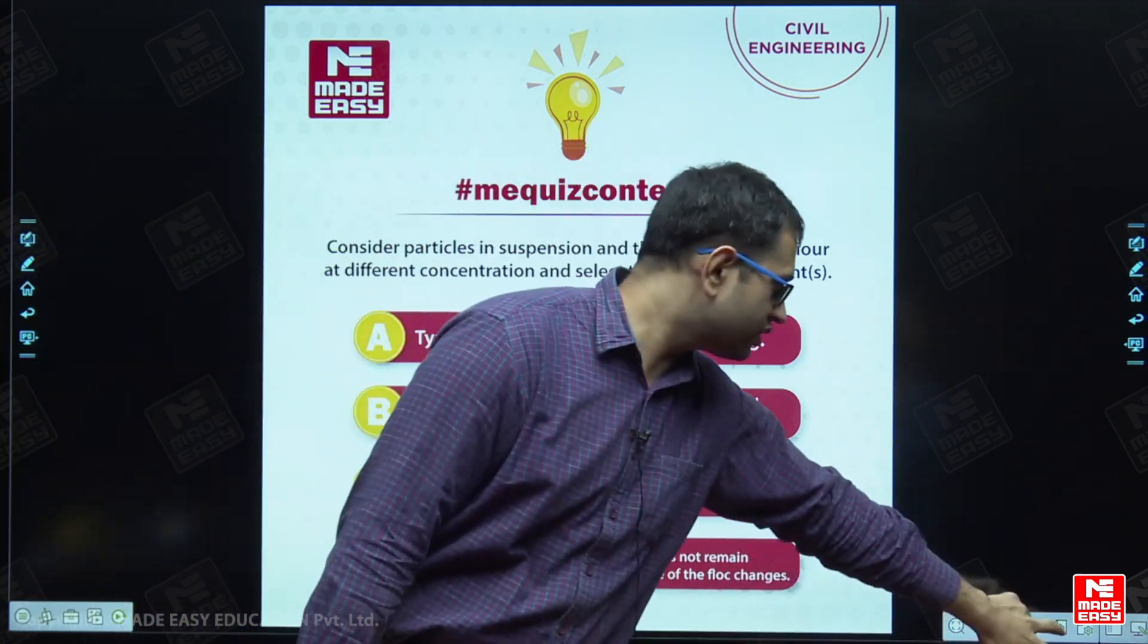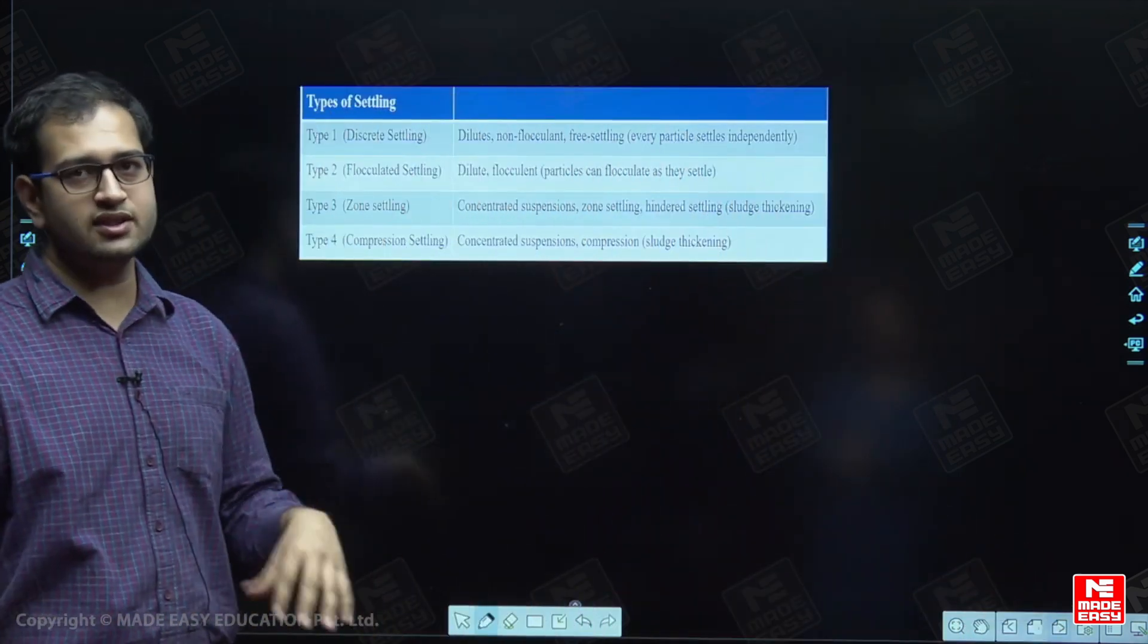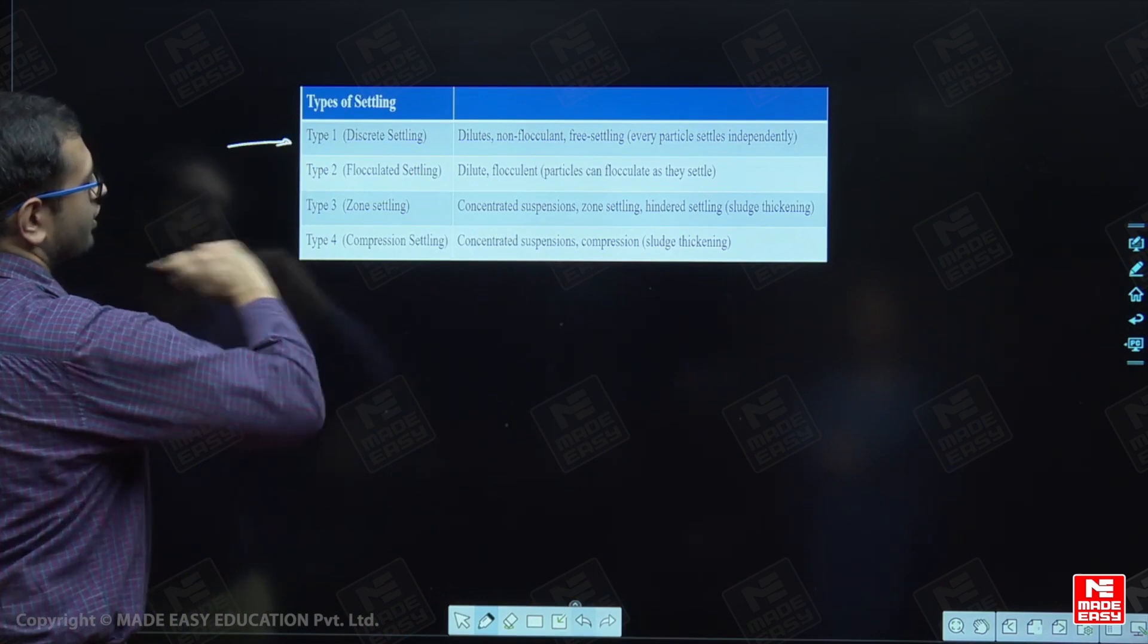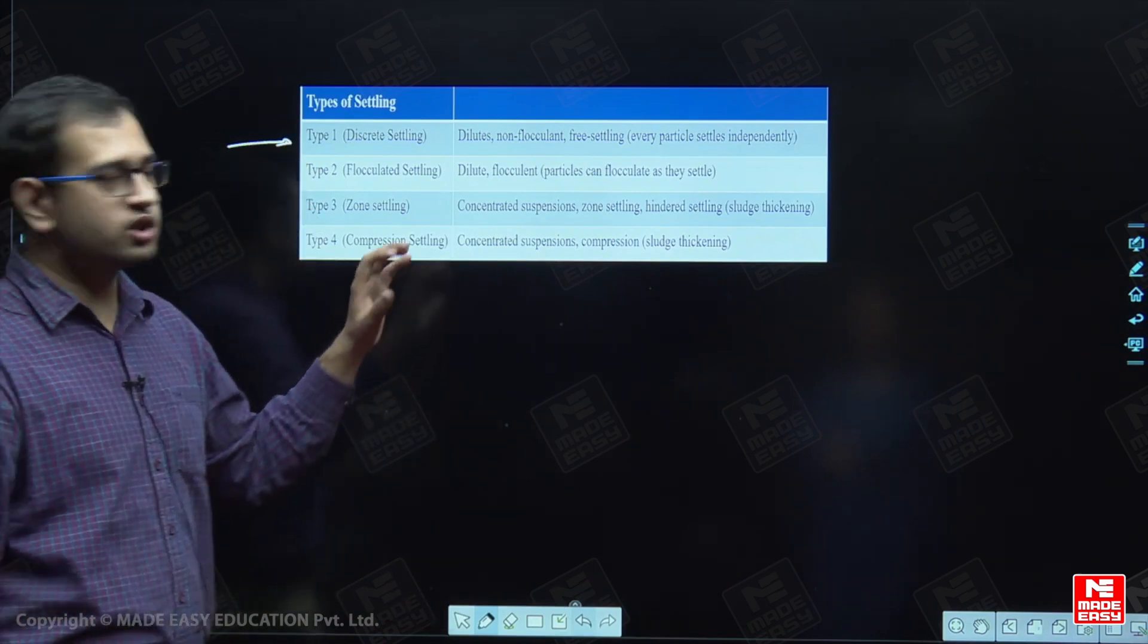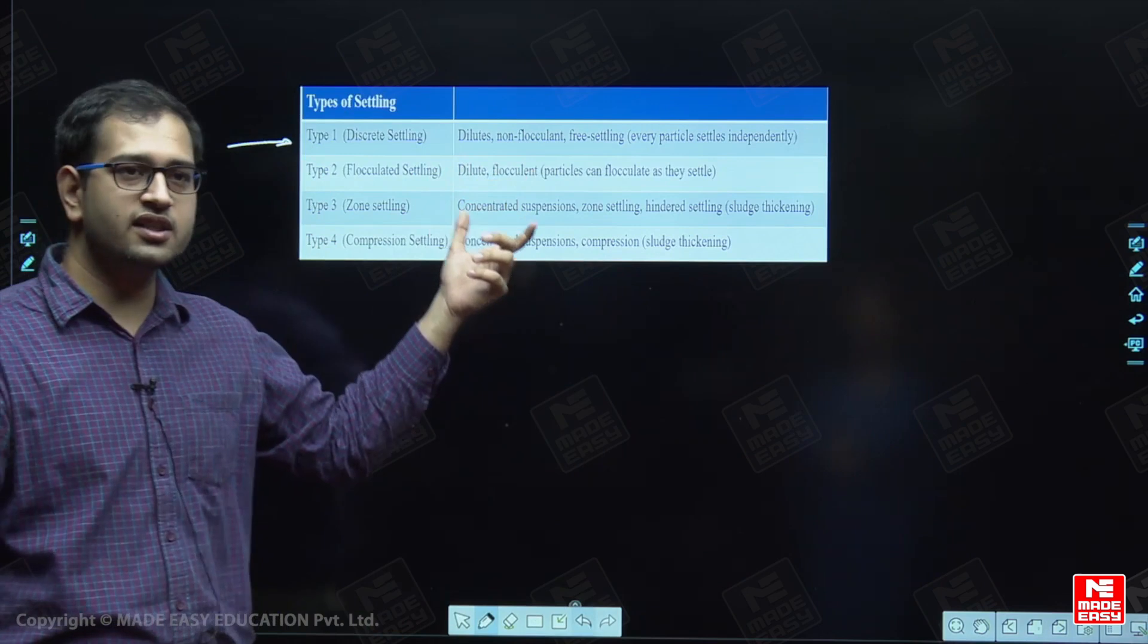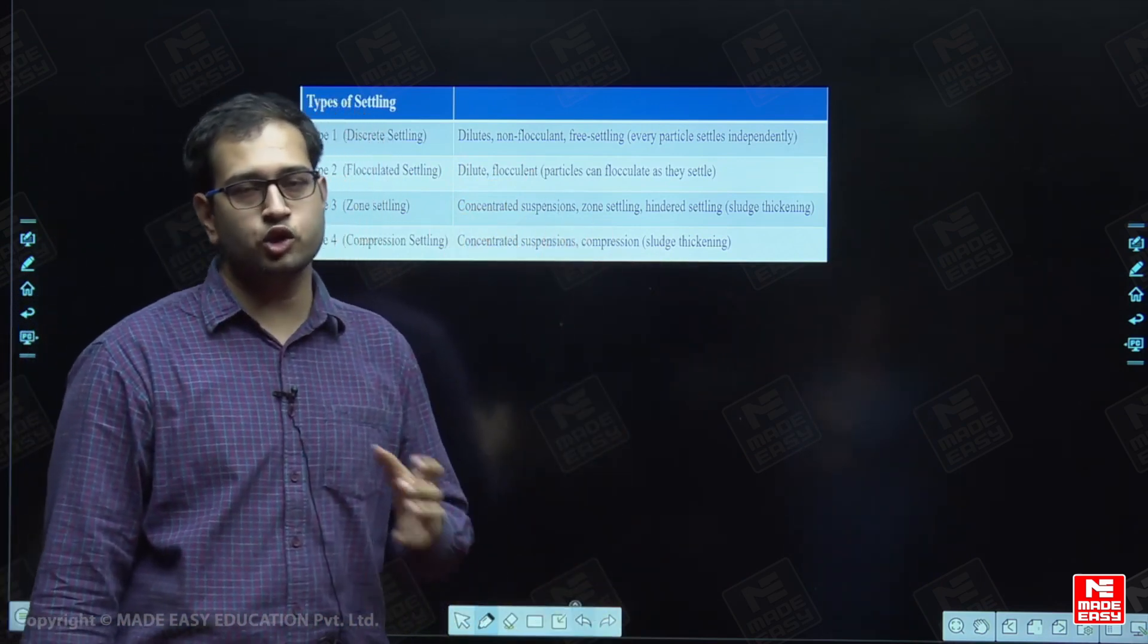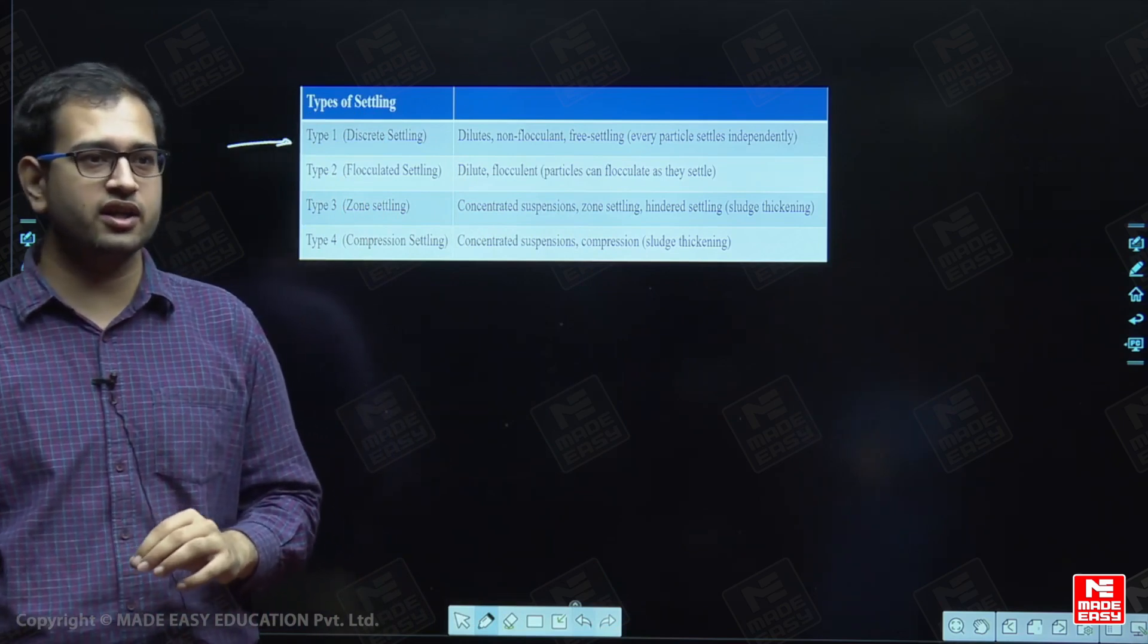Let us discuss about the different types of settling in sedimentation tank. First, there is type 1 settling. Type 1 settling includes the discrete settling, here the particle settles independently without affecting another particles. It happens when the concentration of the particles is very less.